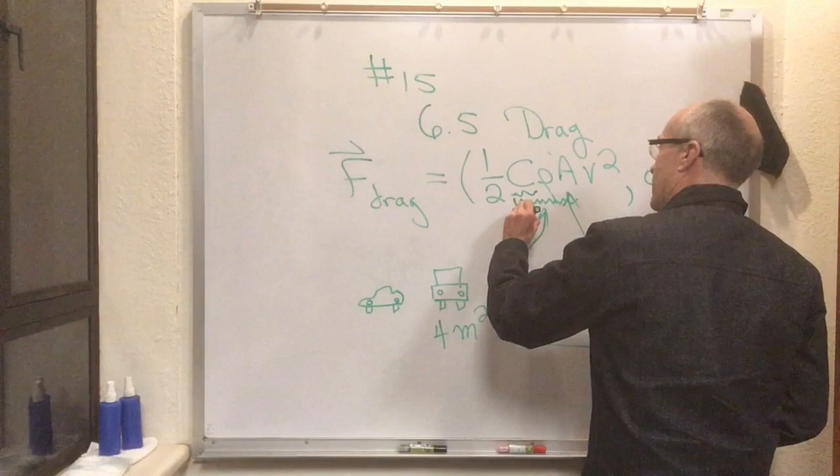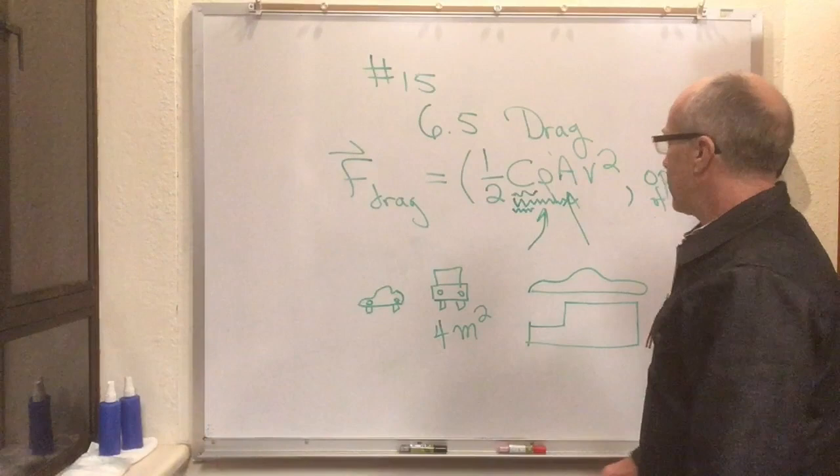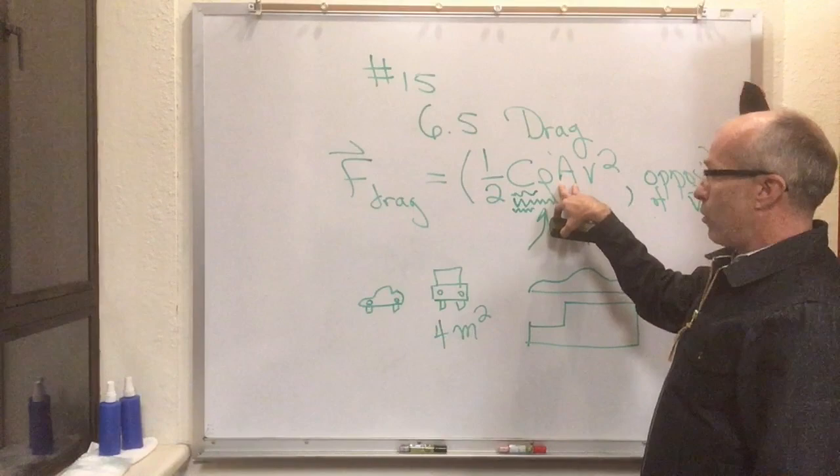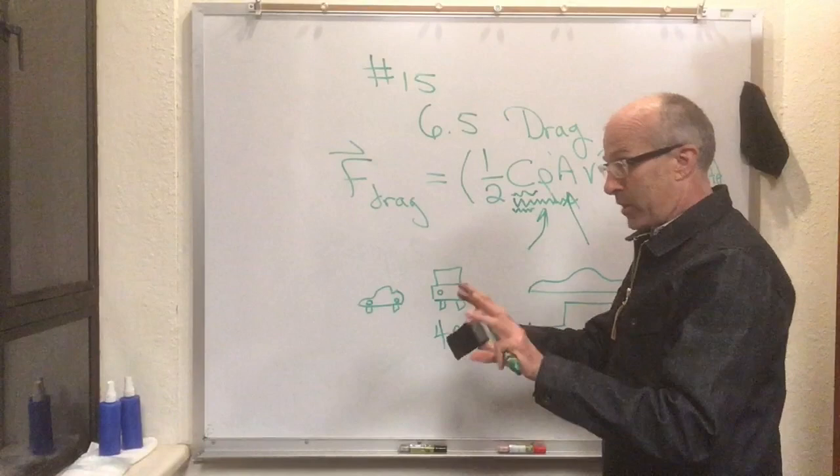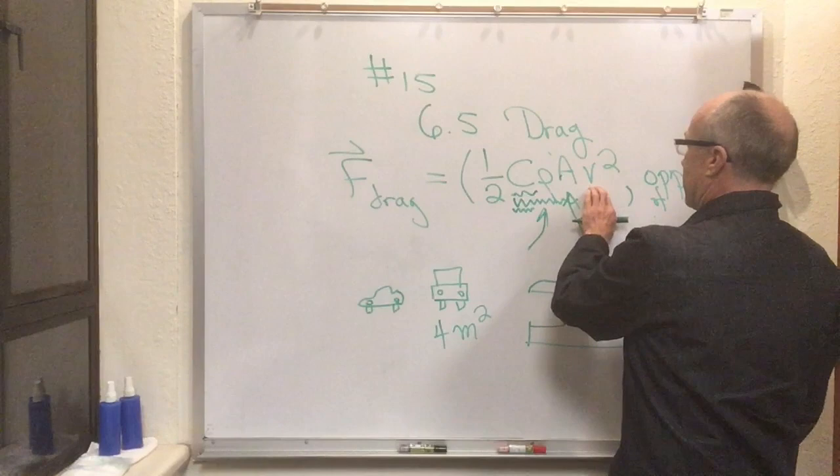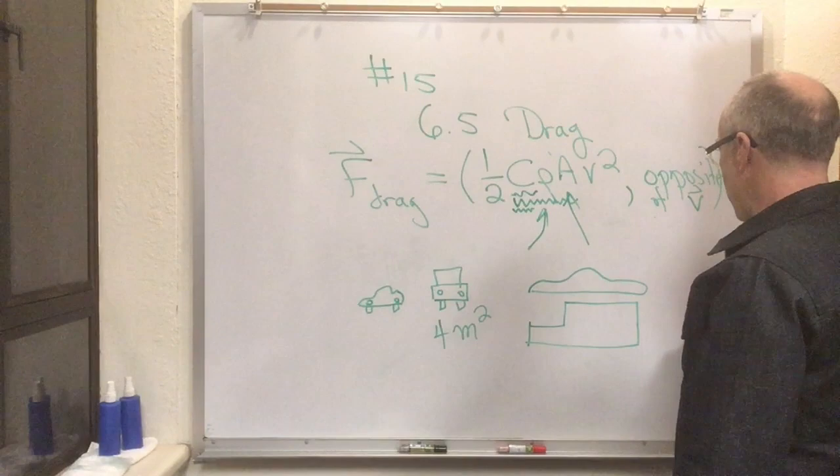And that's captured in this constant out front here, capital C, which is called the coefficient of drag. So this is just a property of the air, this is just a geometrical property of the object as you look at it head-on or whatever direction it's moving through the air, whatever cross section it's presenting. This is the speed squared, and this is this coefficient.